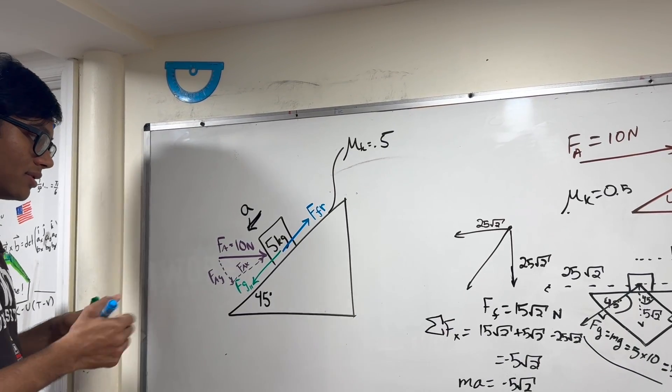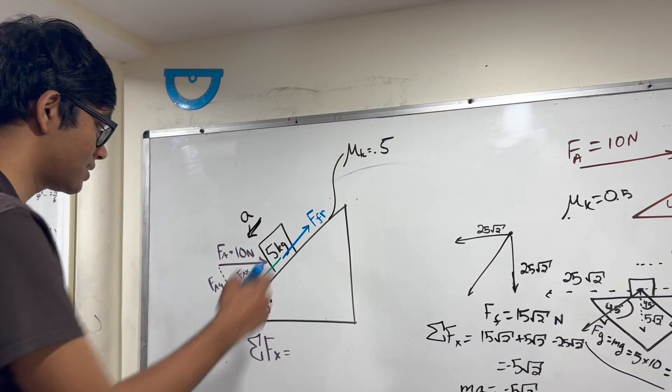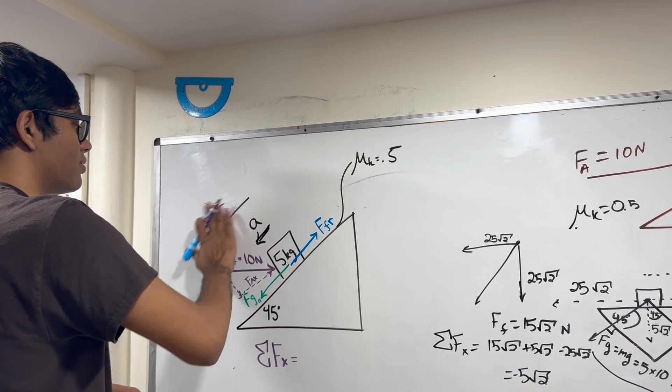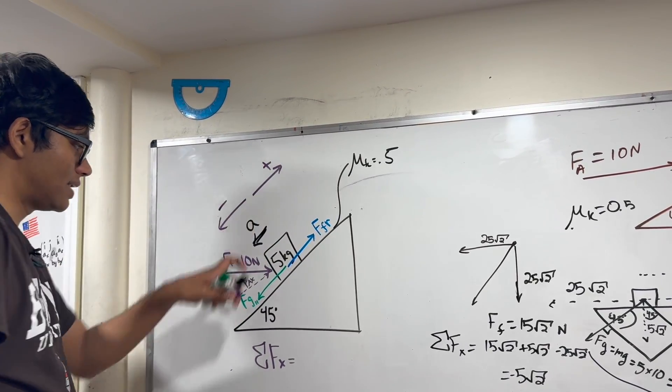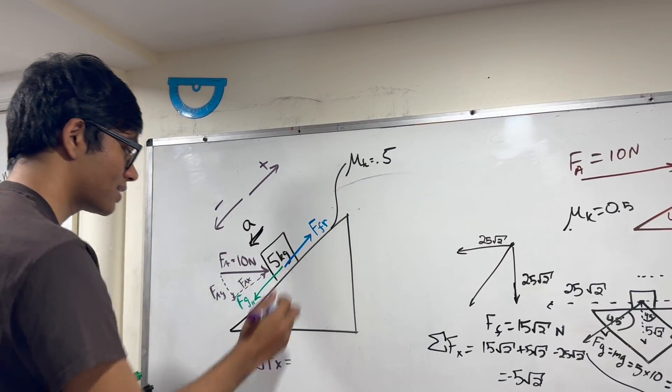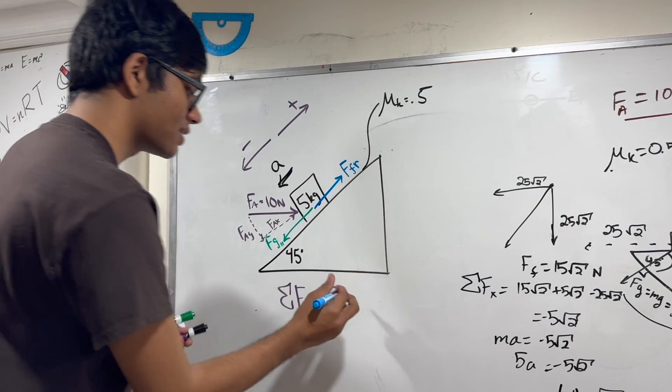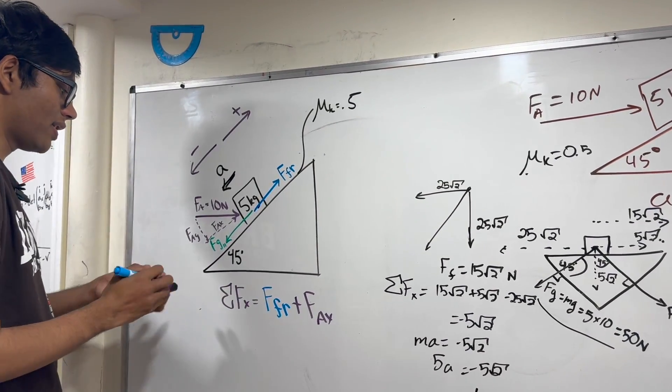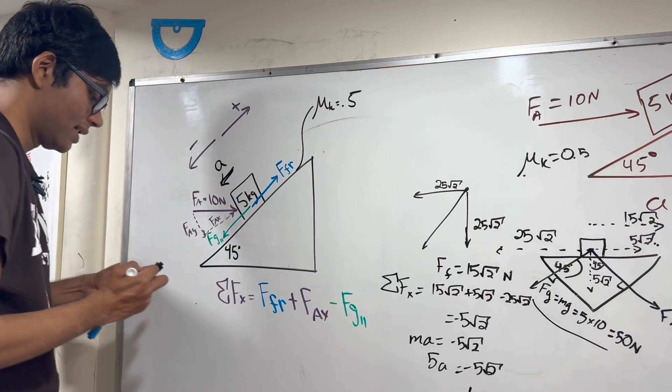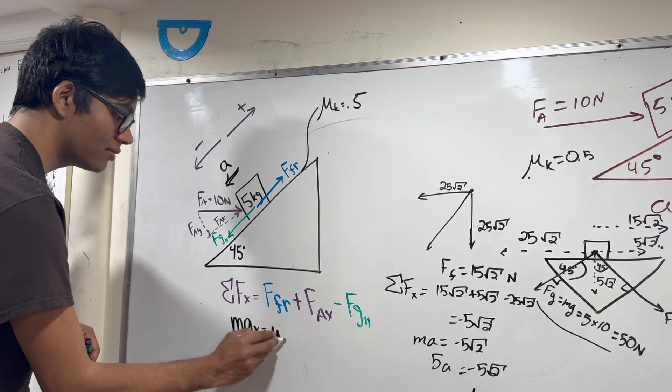Let's write down Newton's second law. The net force in the x direction is—let's make this our positive so that down the ramp is a negative acceleration. Then what are our forces? Friction acts in the positive direction. The applied force also acts in the positive direction, FAx. And gravity acts in the negative direction, so minus FG parallel. Now we can plug everything in. The net force is always MA. Friction is mu FN.